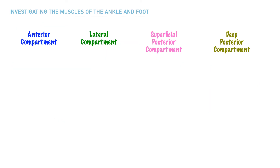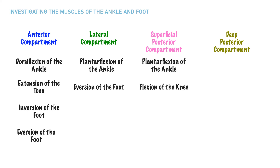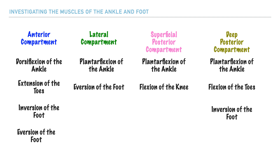Now that we've identified the compartments and the muscles within them, we can note that the muscles in these compartments perform similar movements. If we understand where a muscle is located — which compartment it's in — we have an idea about its function too. In general, the anterior compartment muscles perform dorsiflexion of the ankle, extension of the toes, and both inversion and eversion of the foot. The lateral compartment muscles generally perform plantarflexion of the ankle and eversion of the foot. The superficial posterior compartment muscles generally perform plantarflexion of the ankle and flexion of the knee. And the deep posterior compartment muscles include plantarflexion of the ankle, flexion of the toes, and inversion of the foot.